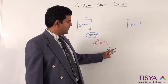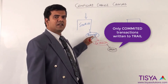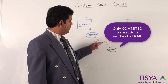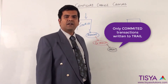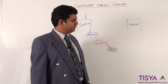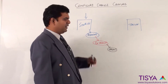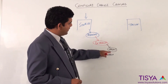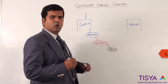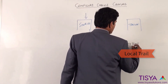One important thing about the trail is that only committed data written into the database will be captured and written to the trail, which will then be propagated into the target. Now, the fact that extract is processing the redo logs means there are two options: one is to write to a local trail, or write to a remote trail.